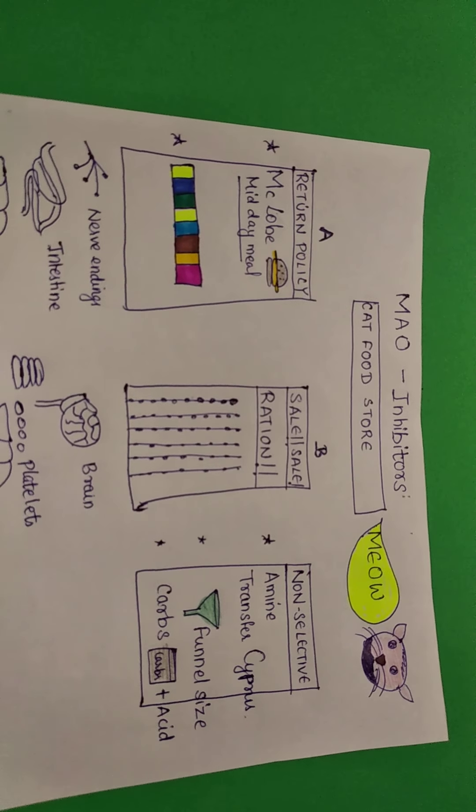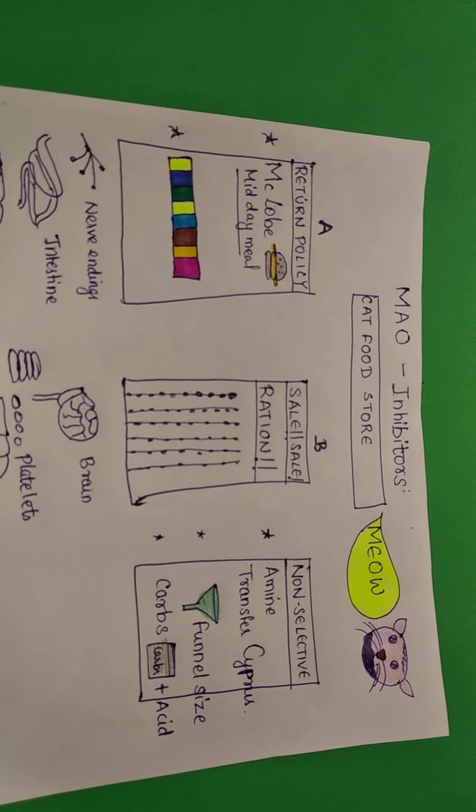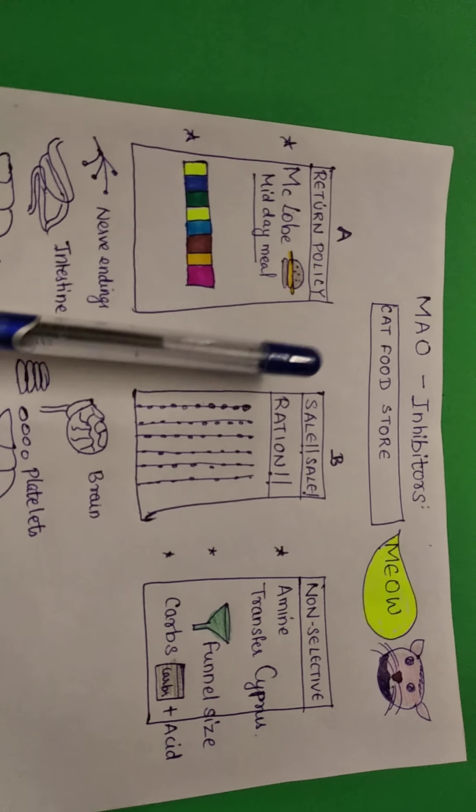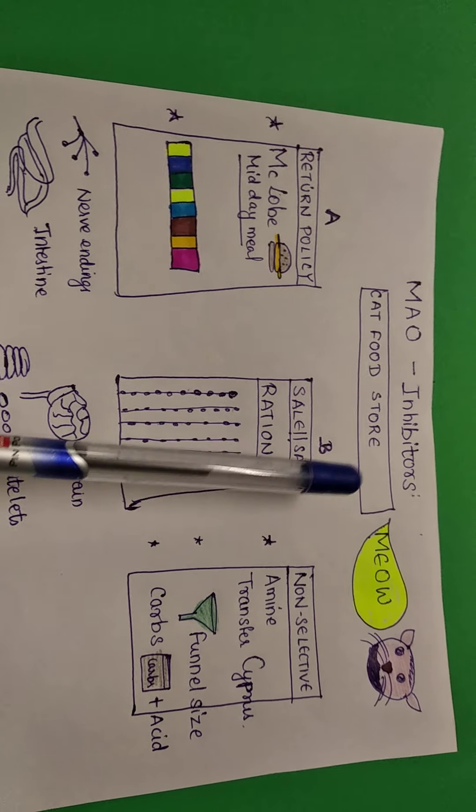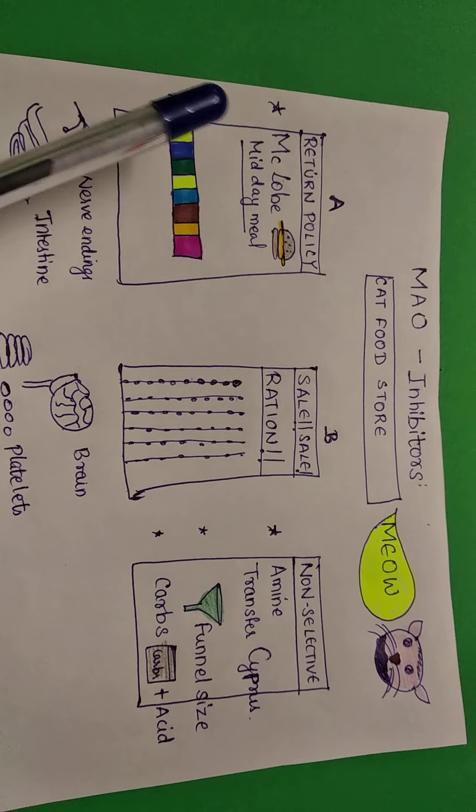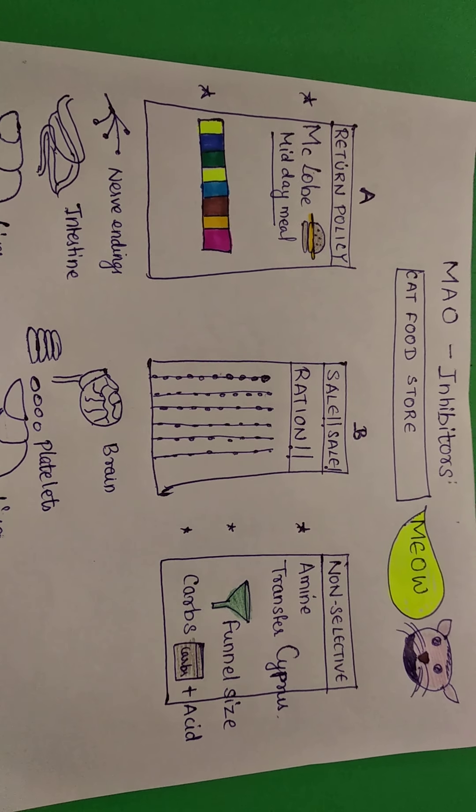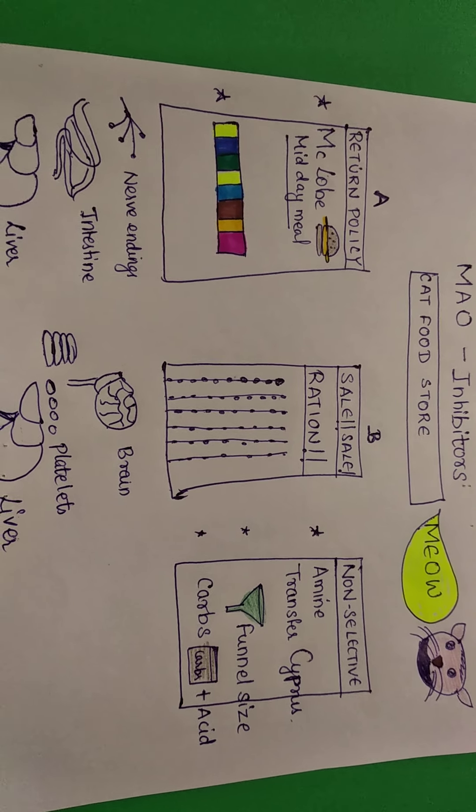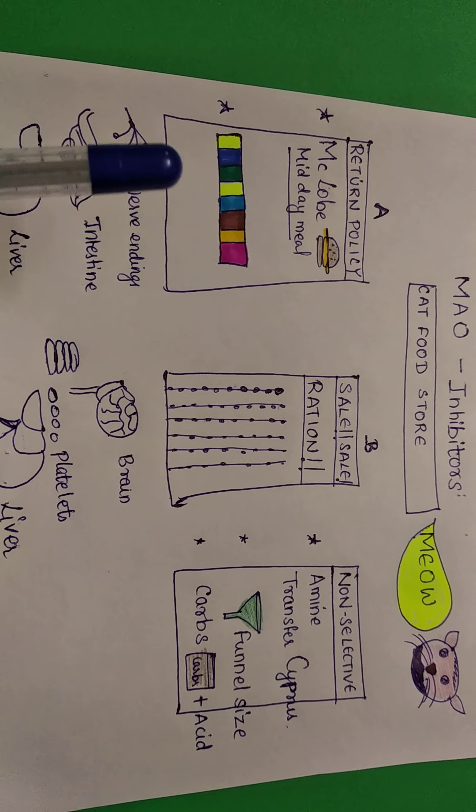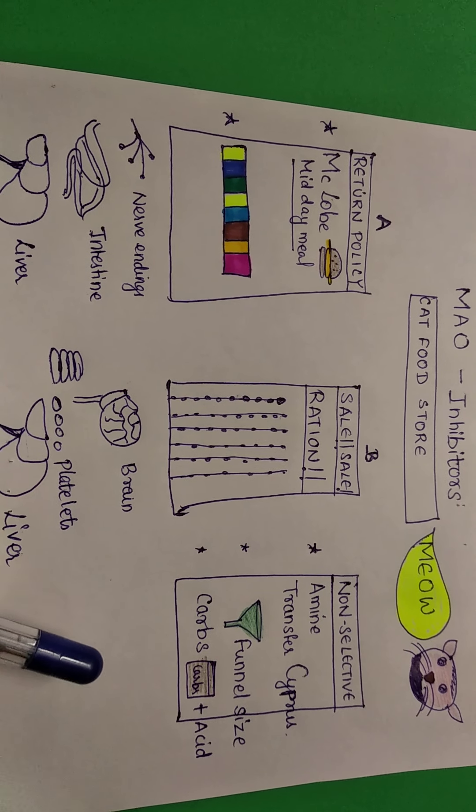For these inhibitors, we will need to remember this picture. Cat food store, that is meow. There is cat food in this store. There are three sections here. Section A, Section B, and another section.